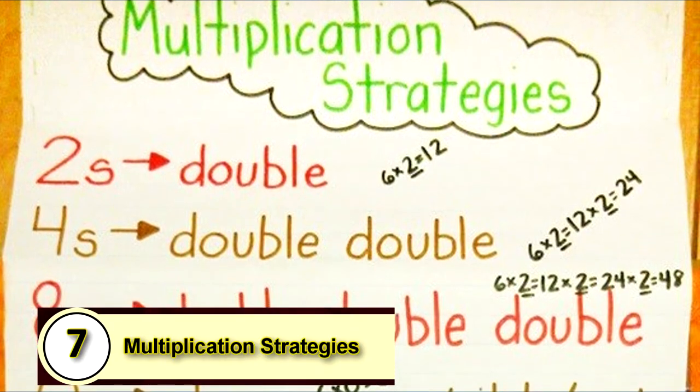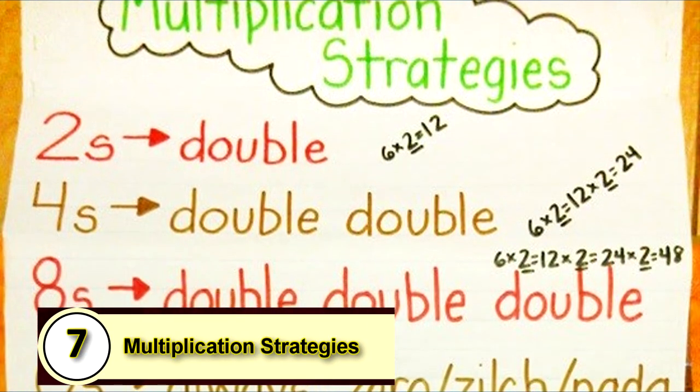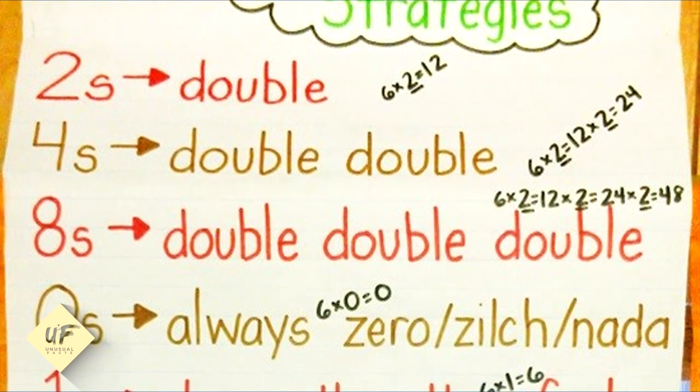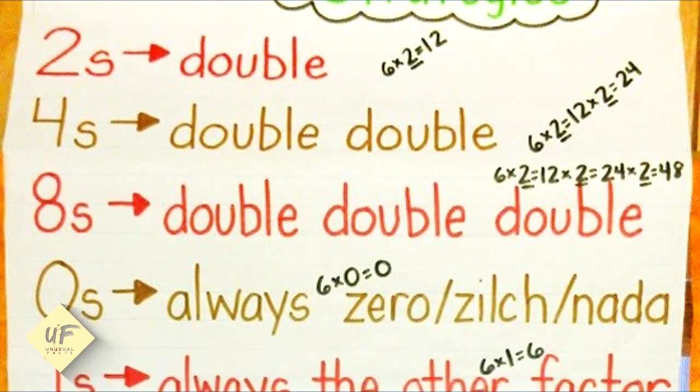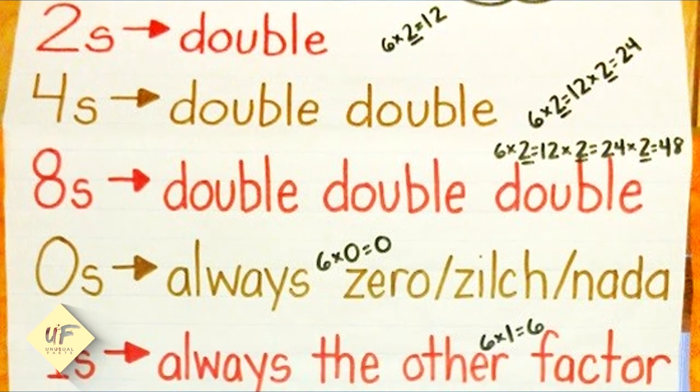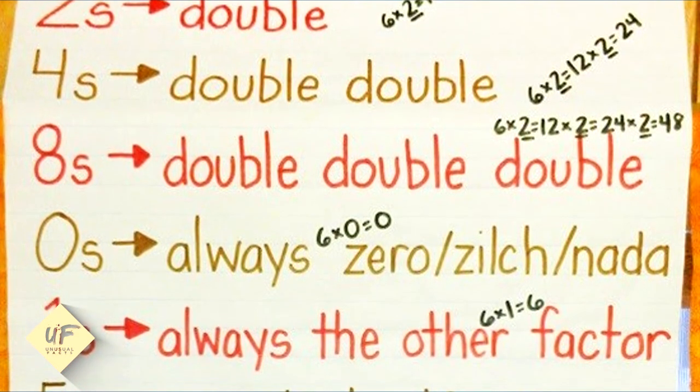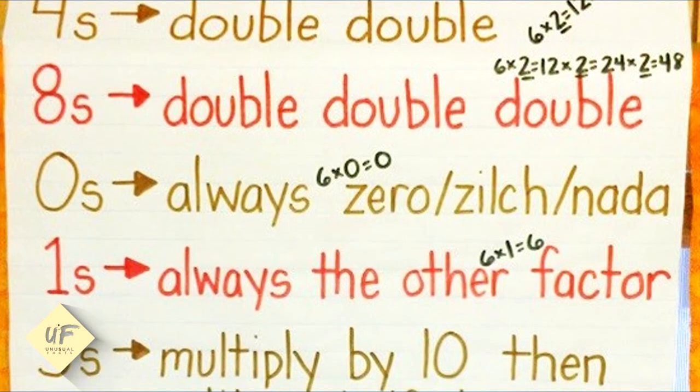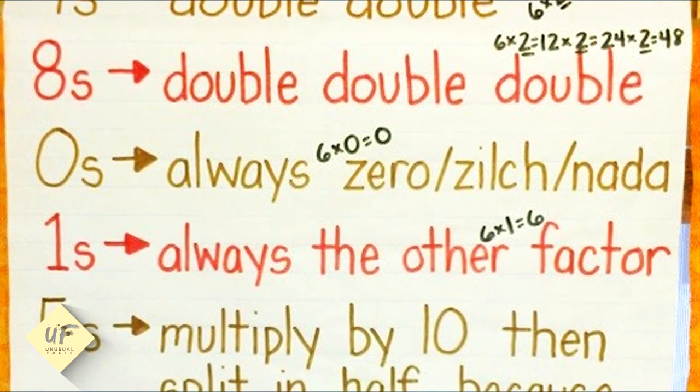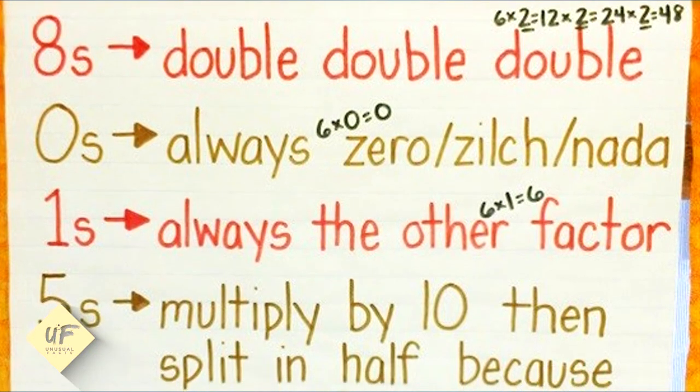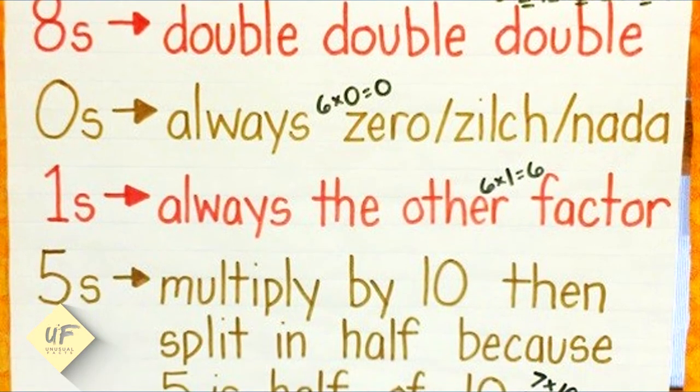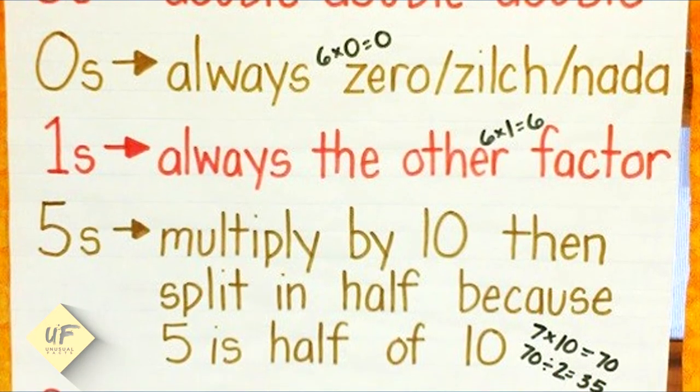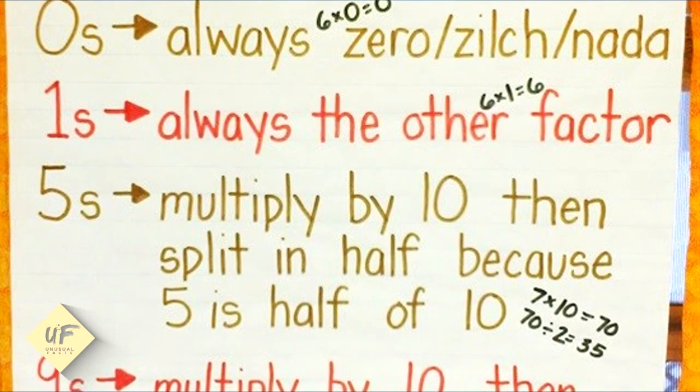Number 7: Multiplication strategies. 2's double, so 6 times 2 is 12. 4's double-double: 6 times 2 equals 12, times 2 equals 24. 8's double-double-double: 6 times 2 equals 12, times 2 equals 24, times 2 equals 48.